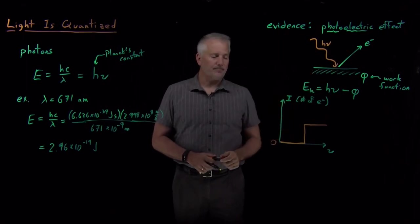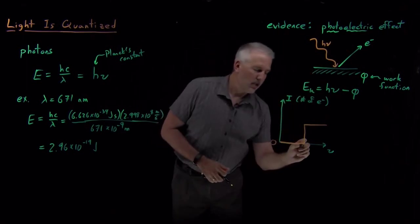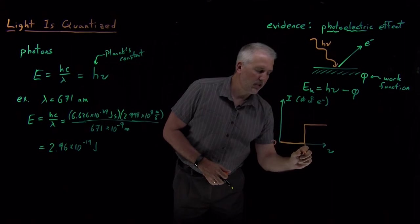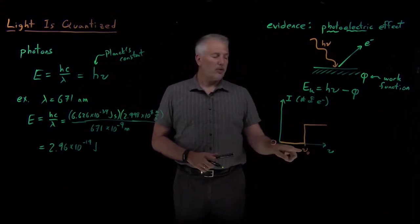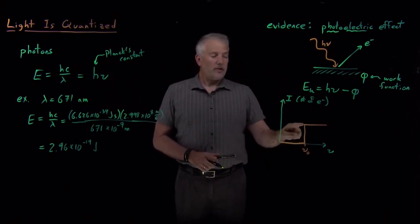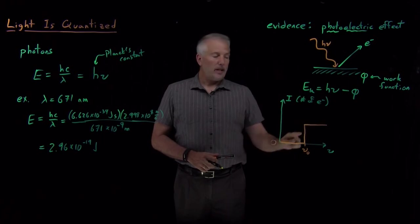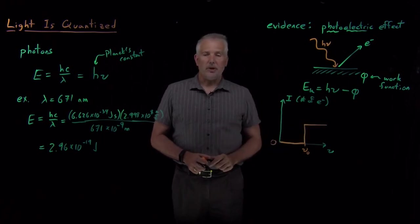At low frequencies, no electrons get kicked out by the photoelectric effect. Once I reach some cutoff frequency, I'll call that nu sub zero, or nu naught, then all of a sudden I start getting electrons kicked out, but that number doesn't change as I continue to increase the frequency.